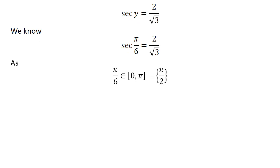As pi upon 6 lies in the closed interval of 0 and pi, except half of pi, therefore pi upon 6 is the principal value of inverse secant of 2 upon square root of 3.